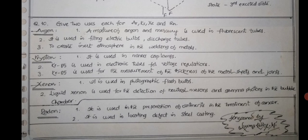Xenon is used in photographic flash bulbs, and liquid xenon is used for the detection of neutral mesons and gamma photons in the bubble chamber.